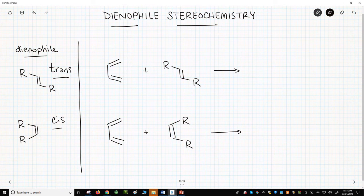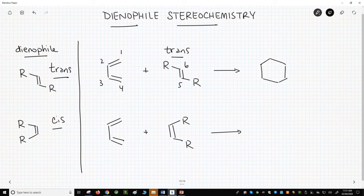If the trans dienophile undergoes a cycloaddition, let's number all the carbons. You will get this product with the two R groups trans.